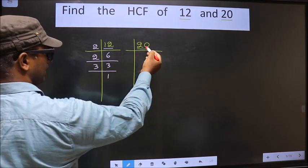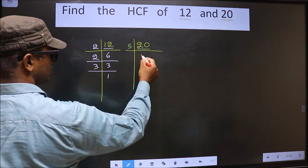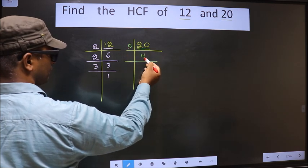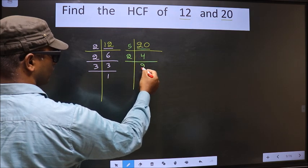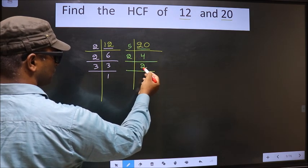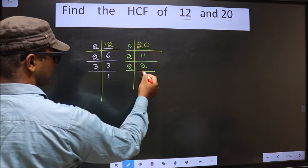Here we have 20. 20 is 5, 4. Now 4 is 2, 2. Now we have 2. 2 is the prime number. So 2, 1, 2.